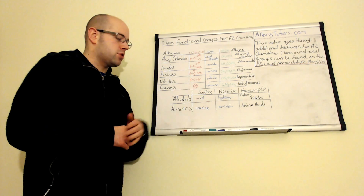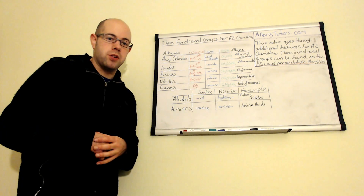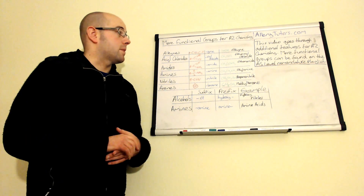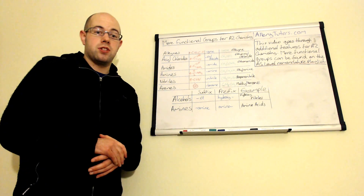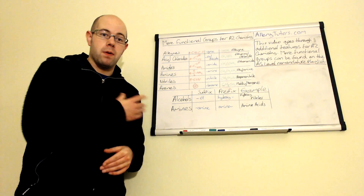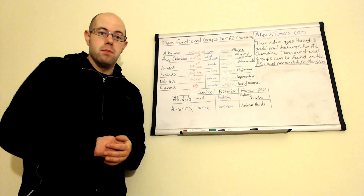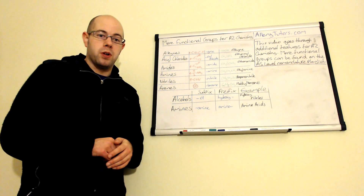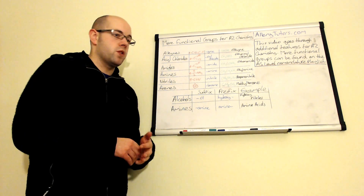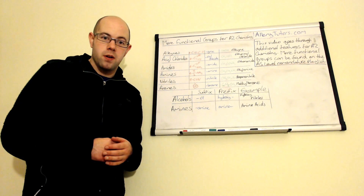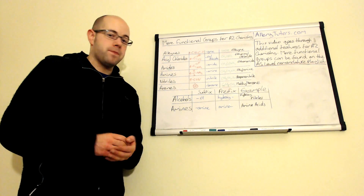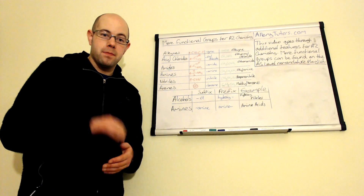It was just to make you aware of those exceptions so you know what you're looking for. That's it — those are just the additional functional groups at A2. There are more that you need to know from AS, but for this video I assume that you know them already. Bye.